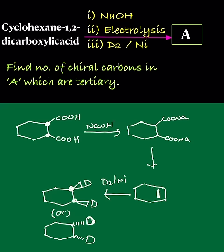So here this is a chiral carbon, this is a chiral carbon. Two chiral carbons are present, but he is asking tertiary chiral carbons. That is not tertiary, so the number of chiral carbons which are tertiary, the answer is zero.